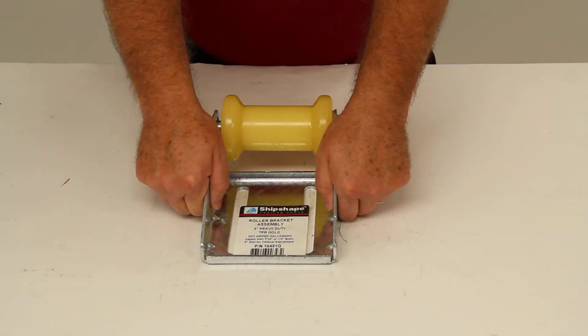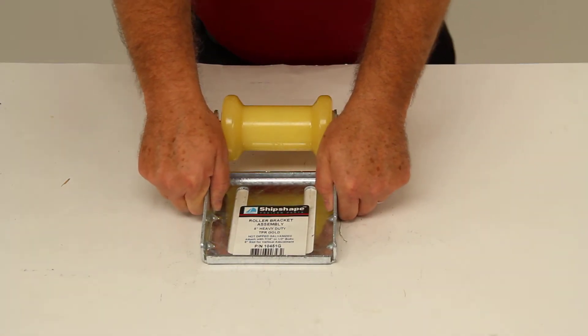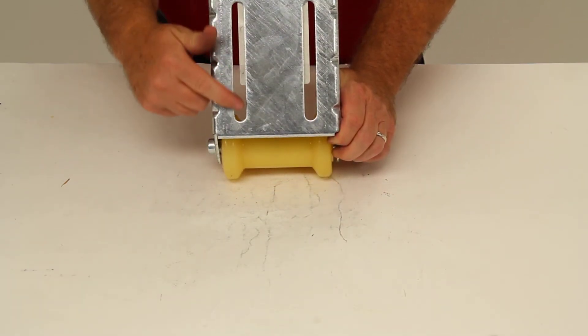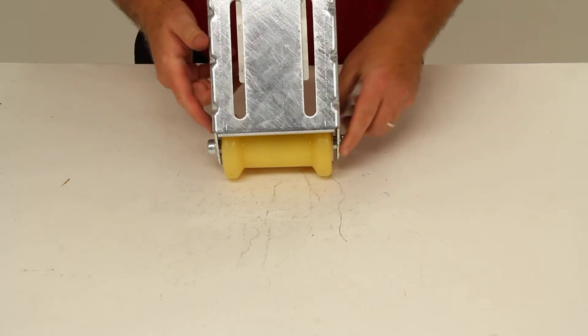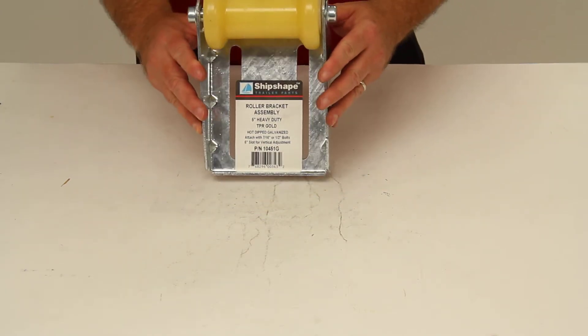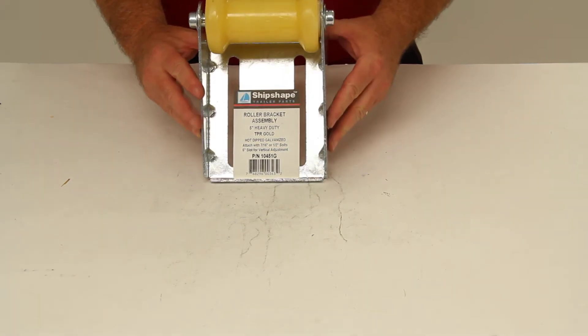The panel bracket lets you bolt your roller assembly onto the front of your boat trailer. It has slotted mounting holes that allow you to adjust the position during installation. It requires half inch or 7/16 fasteners to install which are not included.